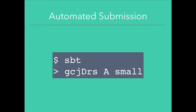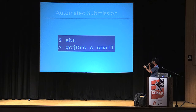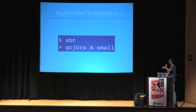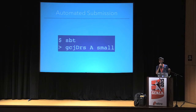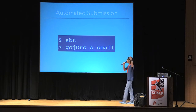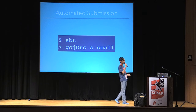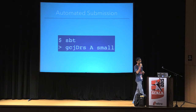With the SBT plugin I wrote, all you do to submit is run GCJDRS — which stands for Download Run Submit — the ID of your problem, which is A, and small, which is the type of dataset you want to run with. Once you run this, it'll download the input for the problem, run with the solution you specified in your build.sbt config, and submit it to Google.